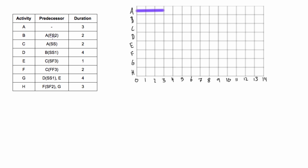Activity B depends on A. It's a finish-to-start relationship with a lag of two. So that means we have to find the end of A, count two days for our lag, and then because it's a regular finish-to-start relationship, we can start at that point two days after and then go for two days because that's its duration.